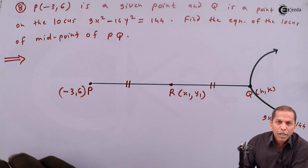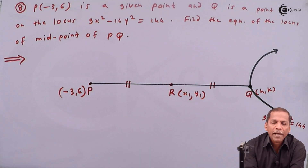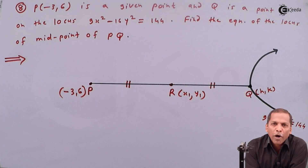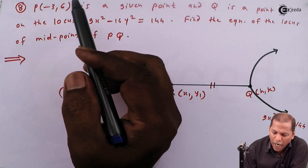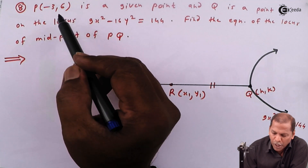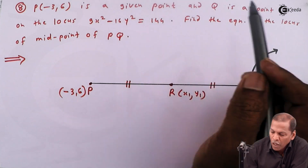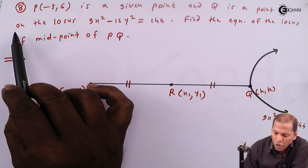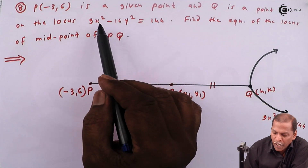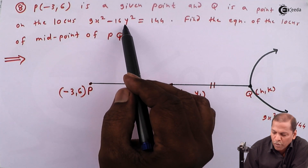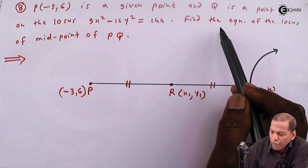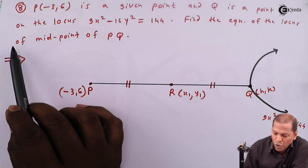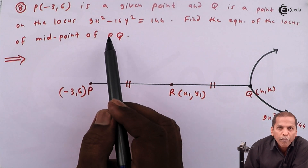Hello friends. Now we see problem number 8, which is also based on the topic of locus. The problem is: P(-3, 6) is a given point and Q is a point on the locus 9x² - 16y² = 144. Find the equation of the locus of the midpoint of PQ.